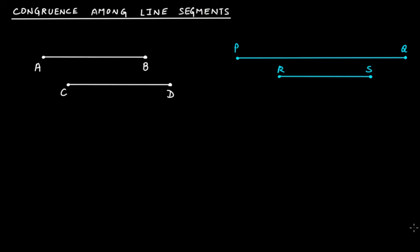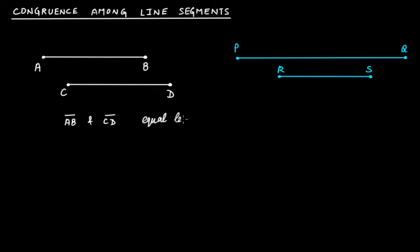We have two pairs of line segments here. First pair, second pair. In the first pair we have two line segments AB and CD. Line segment AB and line segment CD are of equal length.